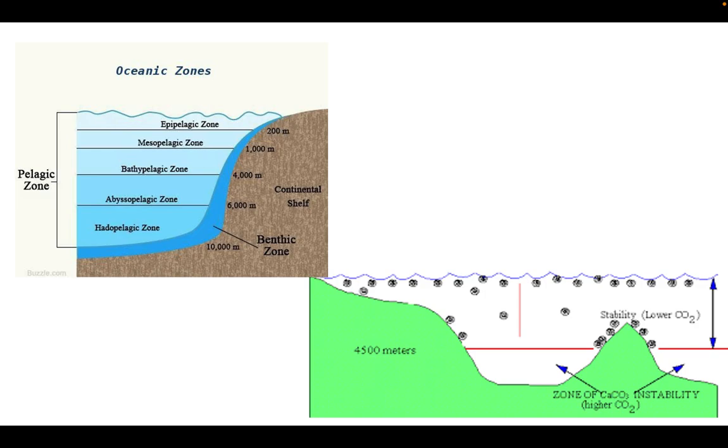And you know that these microorganisms, whether it is foraminifera whether it is coccolithophores, they are in the upper region, epipelagic zones only. They belong to the pelagic zone only, so they produce calcium carbonate over there. How does calcium carbonate form? Calcium ion is there, carbonate ion is there in the ocean.